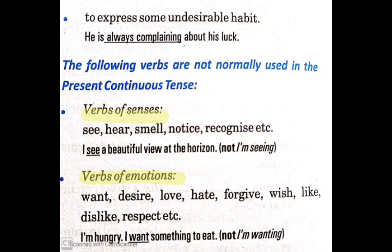Next, we are going to look at some verbs that are not normally used with present continuous tense. First are verbs of senses, like hear, smell, see, notice, etc. For example: 'I see a beautiful view at the horizon.' We do not say 'I am seeing.' Second are verbs of emotions, like want, desire, love, dislike, disrespect, respect, etc. In those cases, we do not use present continuous tense.